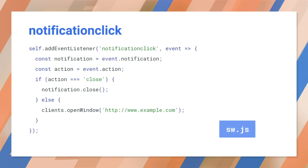Let's see how the two handlers work in a service worker. First, notification close: you can access the notification object from the event object and then get data from that. You might use the primary key property from the data to identify which notification was clicked.